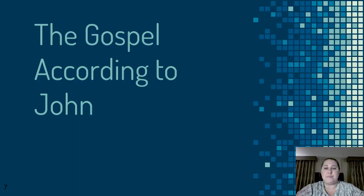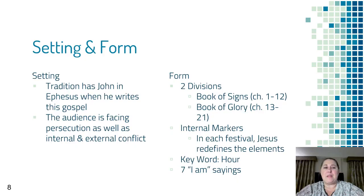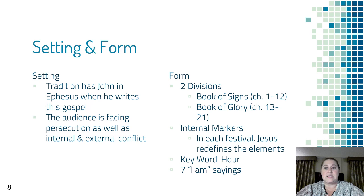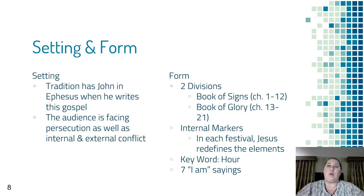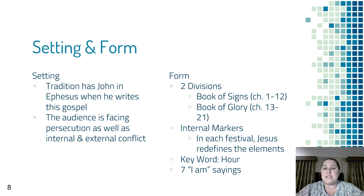Let's talk about the Gospel according to John. John's Gospel is set up with a particular setting — most likely Ephesus. Tradition tells us that John is in Ephesus when he writes this Gospel and that John was the leader of the church in Ephesus for some time. The audience of John's Gospel is facing persecution as well as internal and external conflict. John writes to communicate what it means to be the people of God in this new context of Christianity and what it means for the Spirit to transform their lives. The book is divided into two main divisions: the Book of Signs, chapters 1 through 12, and the Book of Glory, chapters 13 through 21.